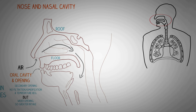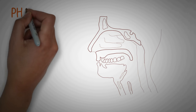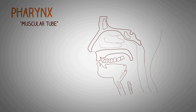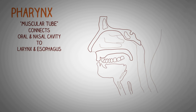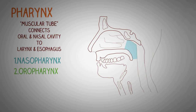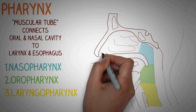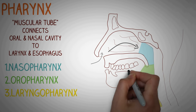The next important structure in the human respiratory tract is the pharynx. The pharynx is basically a muscular tube which lies behind the nose, the mouth, and the larynx, and it connects the oral and nasal cavity to the larynx as well as the esophagus. The part shown in blue is called the nasopharynx, which lies behind the nasal cavity. The second part is called the oropharynx, which lies behind the oral cavity. The third part is called the laryngopharynx, which lies behind the larynx.